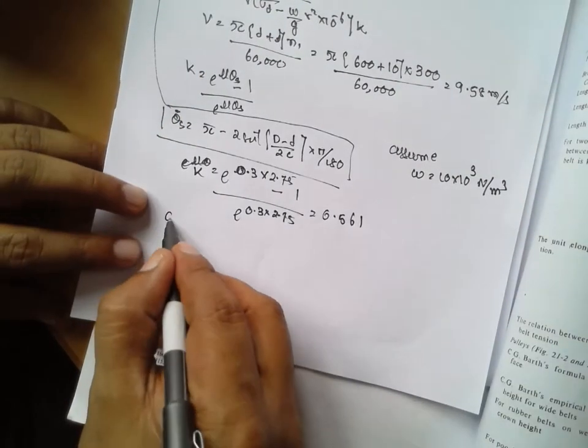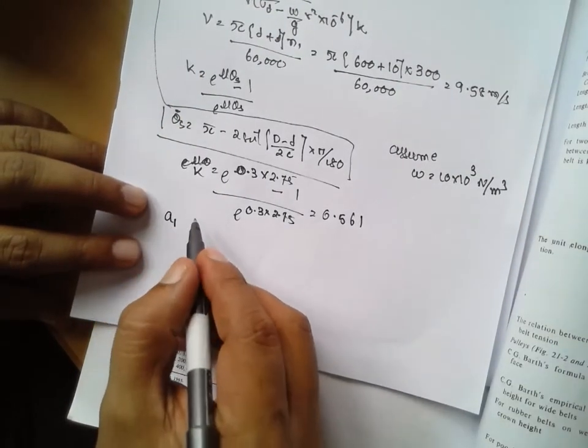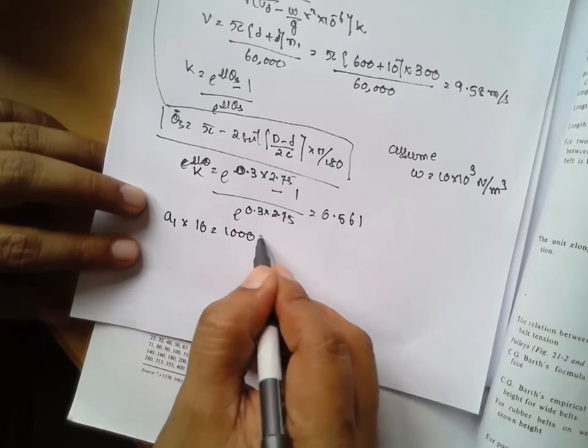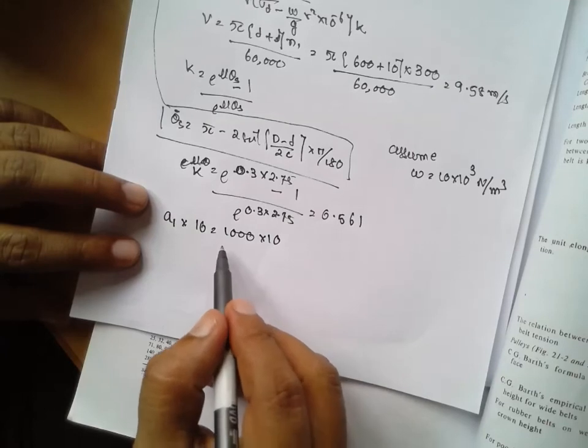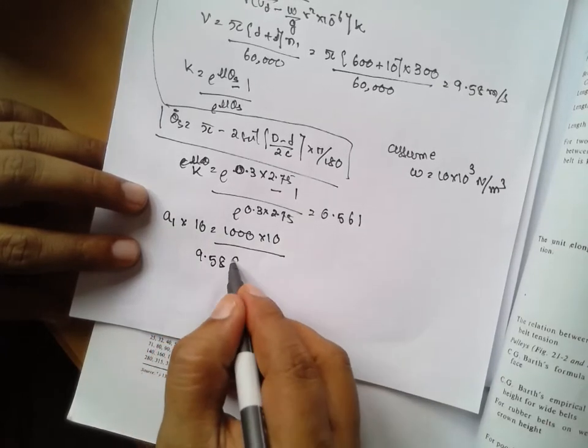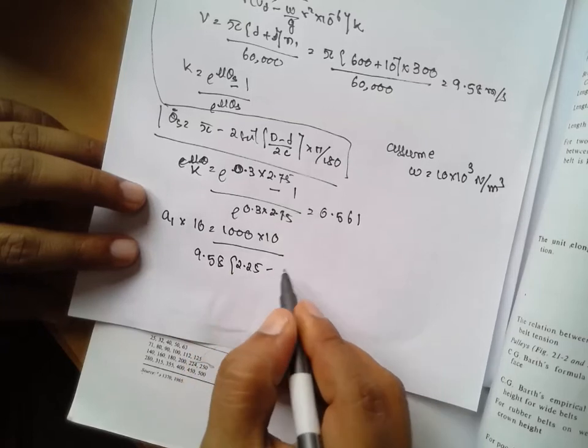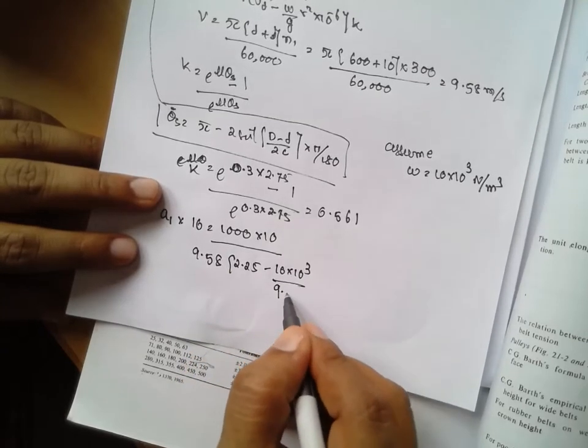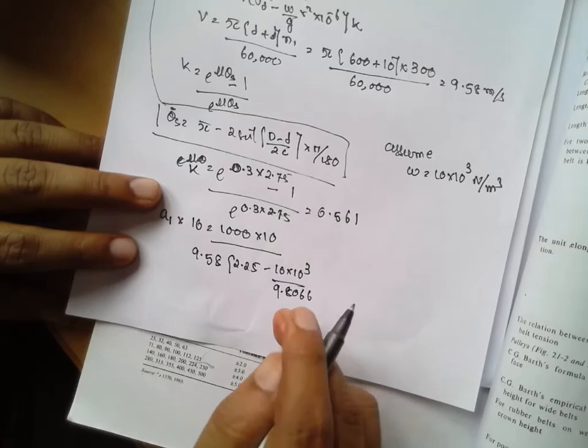A times t is 10 into 1000 into 10 divided by 9.58 times 2.25 minus 10 into 10 raised to 3 divided by 9.8, it is data in book.